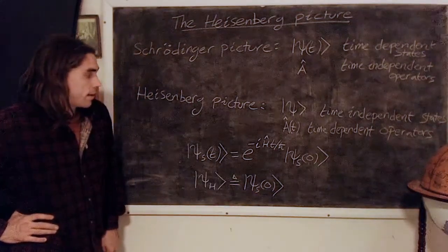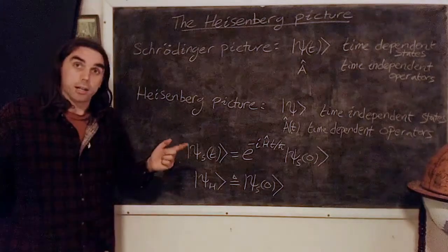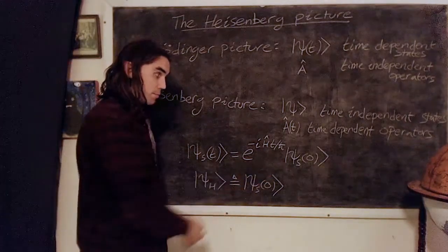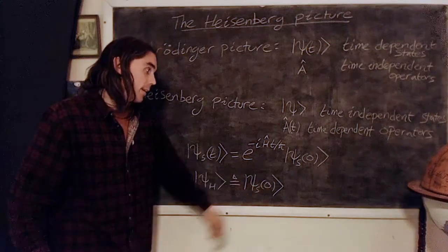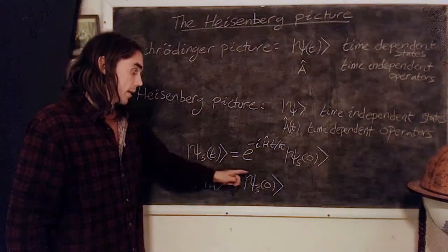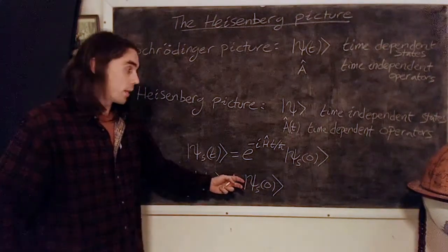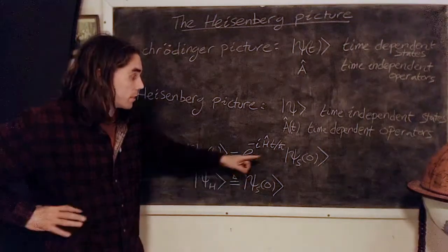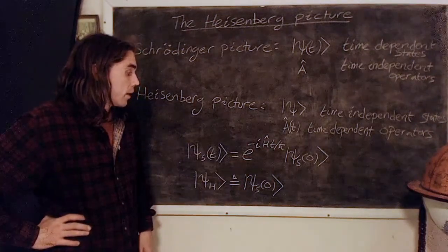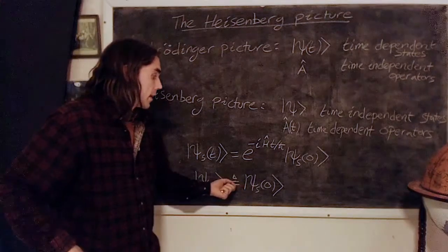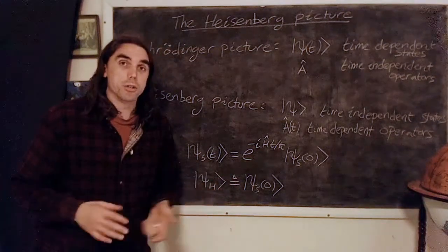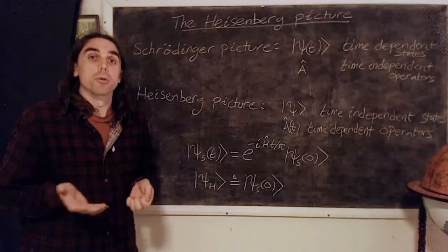Other choices are completely fine. If we were to pick some random time like 10 seconds instead of zero, all it would do is multiply this by a complex phase of unit magnitude because of this unitary operator.